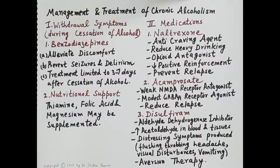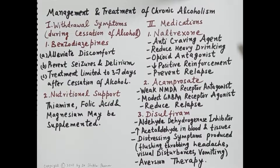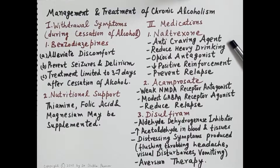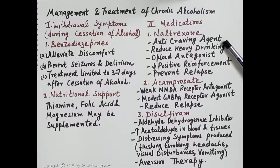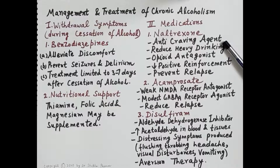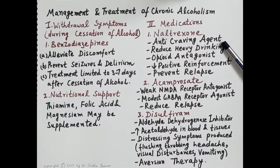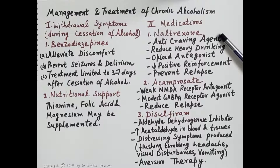Three medications are normally used for the treatment of chronic alcoholism. The first drug is naltrexone. Before discussing naltrexone, it is important to know that when alcohol is consumed, endorphins are released in the mesolimbic pathway. These endorphins stimulate the release of dopamine, which is responsible for the reward stimulus — the feelings of pleasure, excitement, and euphoria observed after alcohol consumption.